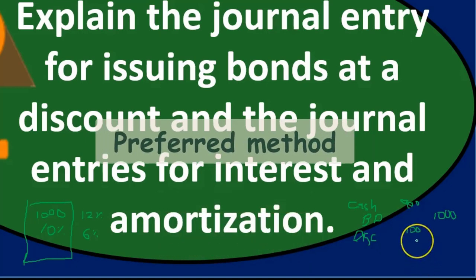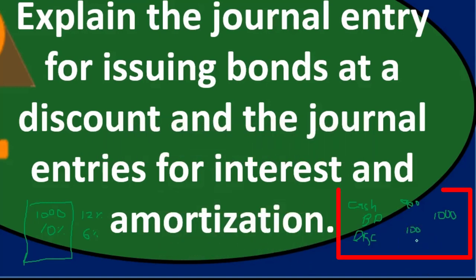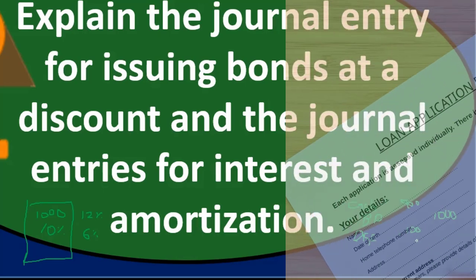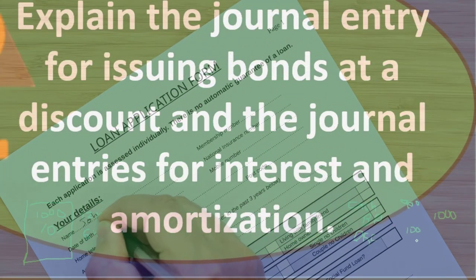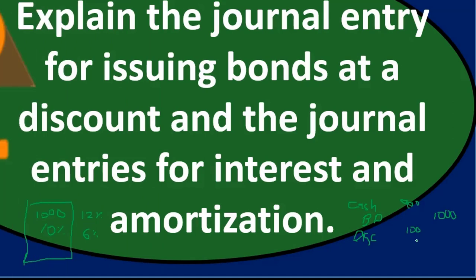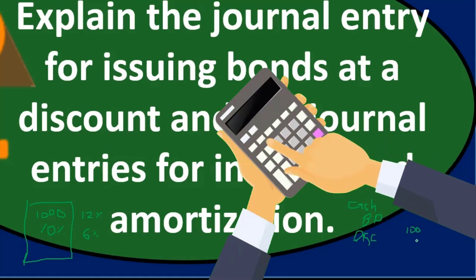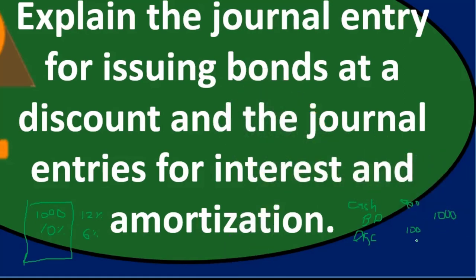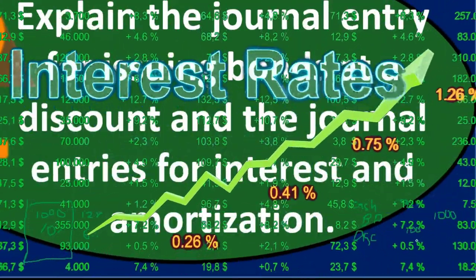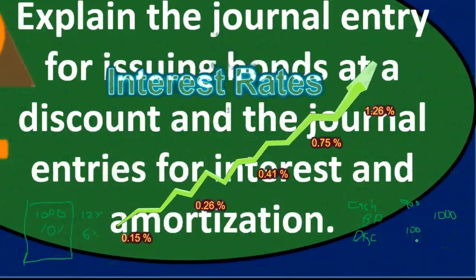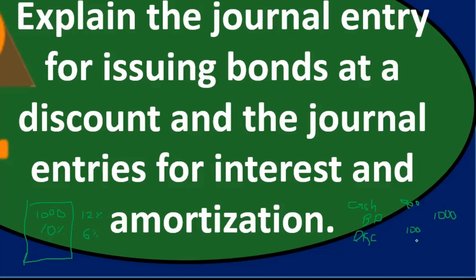The effective interest method is the preferred method. It works the same way but the amortization amount won't be even each period. It's similar to an installment loan being amortized — the amount allocated to interest will differ because the carrying amount of the bond differs each period. It's a bit more complex to calculate, but the end result is the same: the discount goes to zero by the end, with interest amounts differing from period to period.